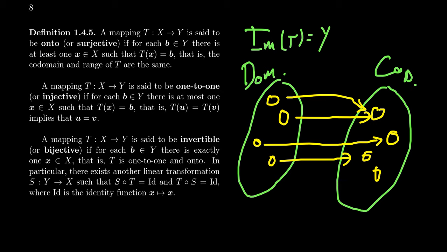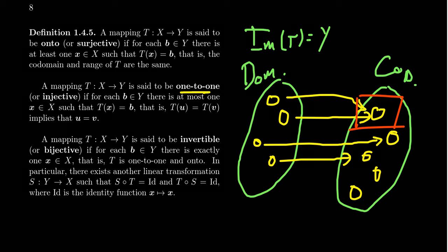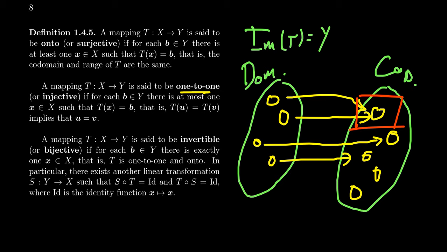What does one-to-one mean? A one-to-one function means that if we look at the arrows, there's no instance of a vector which gets mapped onto twice or three times or more than once. In this picture, this would be a violation — this is not a one-to-one map because there are two vectors mapping onto the same vector, and we don't allow that for one-to-one.